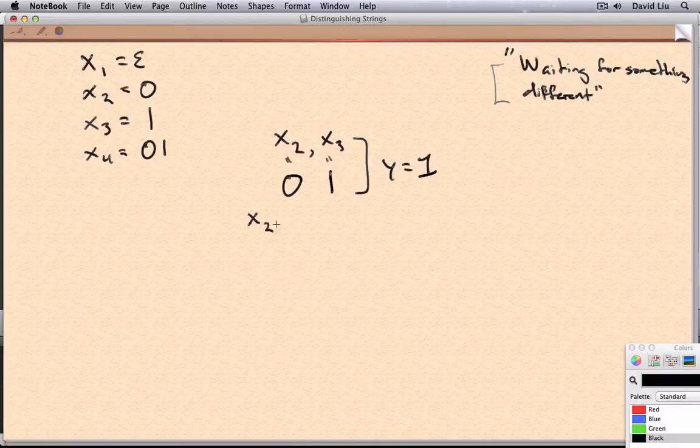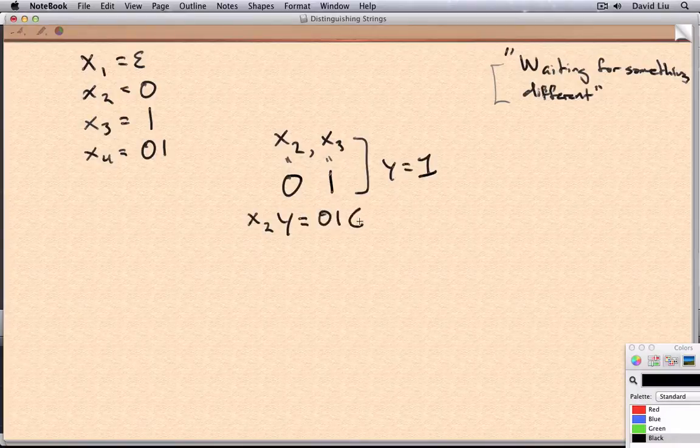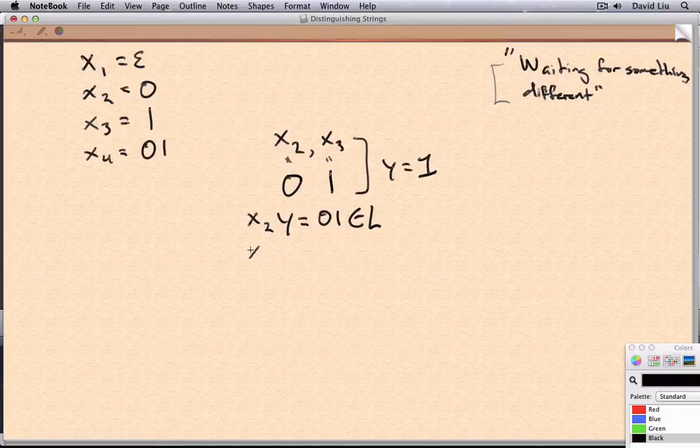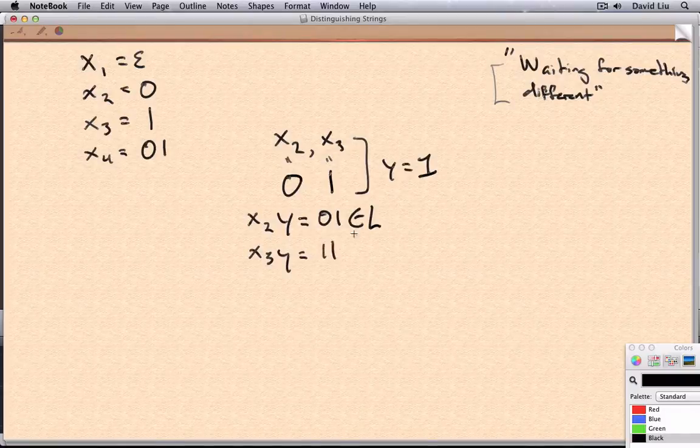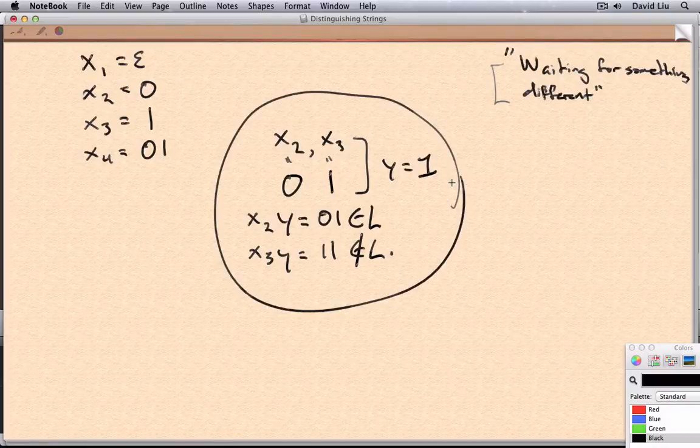And then it's not hard to see that X2Y is equal to 01, which is in L. But X3Y is 11, and it's not in L. And that's it.